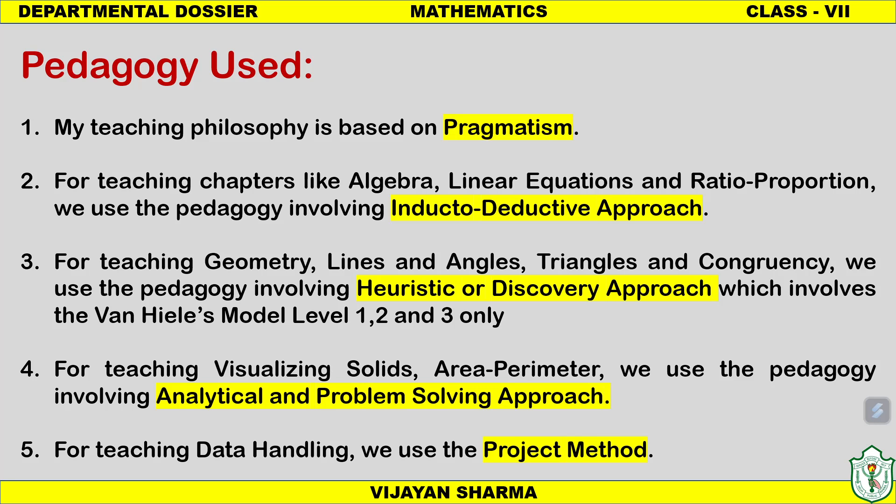For teaching chapters like algebra, linear equations, and ratio and proportion in class 7, we use the inducto-deductive approach. In this approach, we make students solve certain kinds of questions in a particular way and then derive the formula or method for solving those questions. The main stress is on solving lots of questions and examples, making students aware of how to solve them, building practice, confidence, and ultimately becoming good in mathematics.